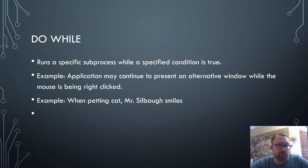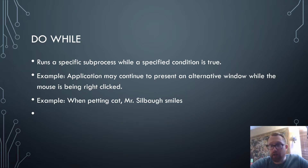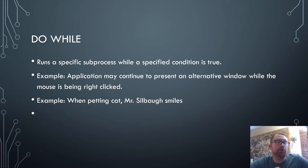Do-while runs a specific process while a specified condition is true. An application may continue to present an alternative window while the mouse is being right-clicked — so while an action is occurring, something else may be happening as well. For example: when I am petting a cat, I will smile. Do-while occurs when an action is occurring and while that action is occurring, something else is doing something as well.